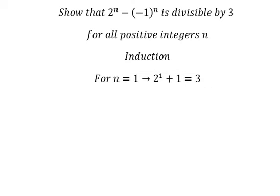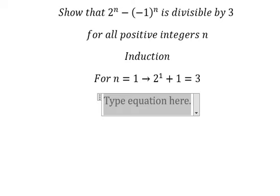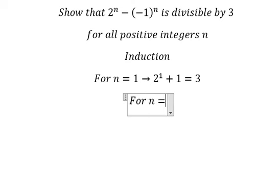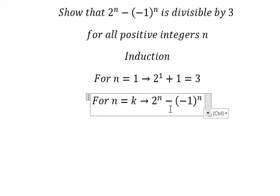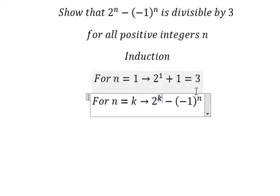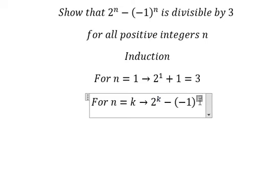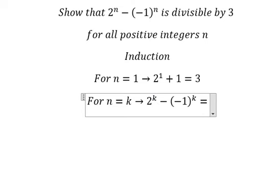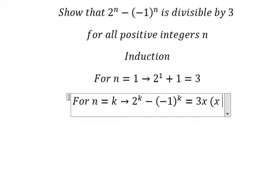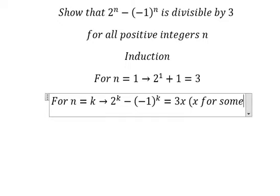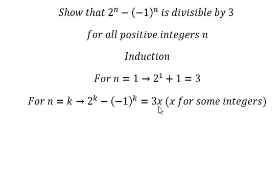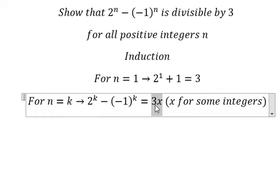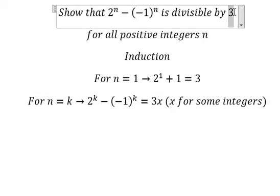Now the next one I will put for n equals to k. So in this one, I will put k here. And this one should be equals to 3x and x for some integers. We need to denote this way. That means this number in here, they will have the number 3x and 3x can divide by number 3.